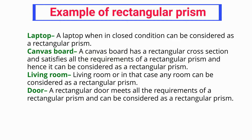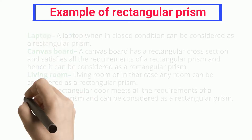Living room: a living room, or in fact any room, can be considered as a rectangular prism. Door: a rectangular door meets all the requirements of a rectangular prism and can be considered as one.